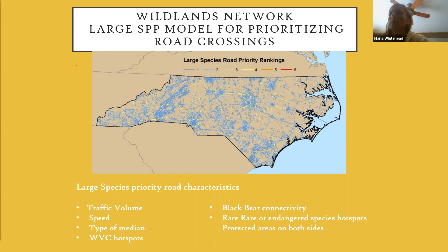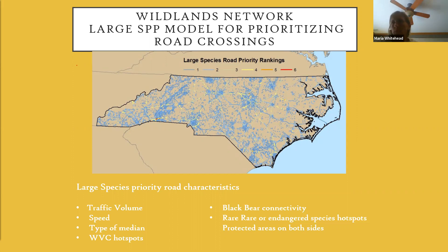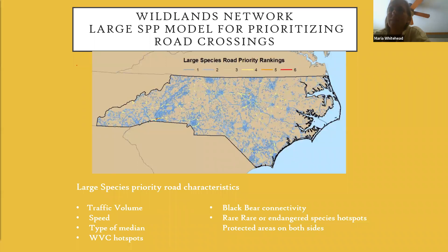They looked at wildlife-vehicle collision hotspots—defined as 2.5 collisions per 0.25-mile radius per year. Additional models included black bear connectivity, rare and/or endangered species hotspots, and areas already protected on both sides of the road—either in state or federal ownership or under conservation easement—where it would make more sense to place a wildlife road crossing, knowing that natural habitat is likely to persist there in the future.